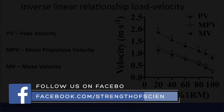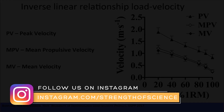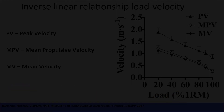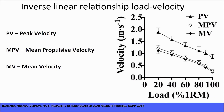When you assess this for an individual athlete, they may produce different velocities compared to other athletes with the same relative loads, and this can be due to anatomical differences in limb lengths or fibre-type expression. Therefore, you need to create an individualised load-velocity profile for each athlete.